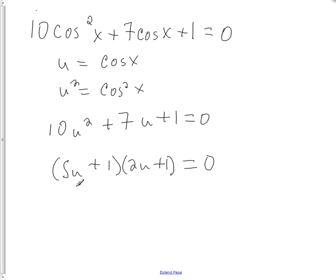So I get 10u squared plus 2u plus 5u is 7u plus 1. Yep, so we're set.